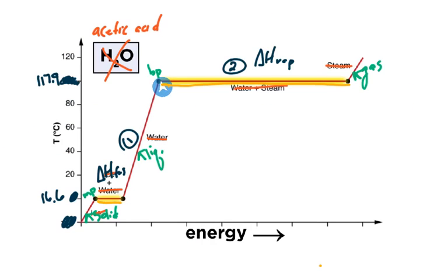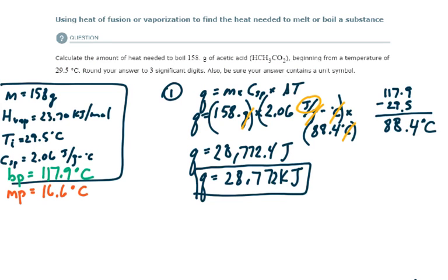But once I have heated it to 117.9 degrees from 29.5, then I have to phase change. So we need to figure out how much energy is required to phase change all of that acetic acid. And to do that, we're going to use the molar heat of vaporization. For step two, the amount of energy equals molar heat of vaporization times the number of moles. So what is the heat of vaporization? 23.70 kilojoules per mole. Times the number of moles of acetic acid.